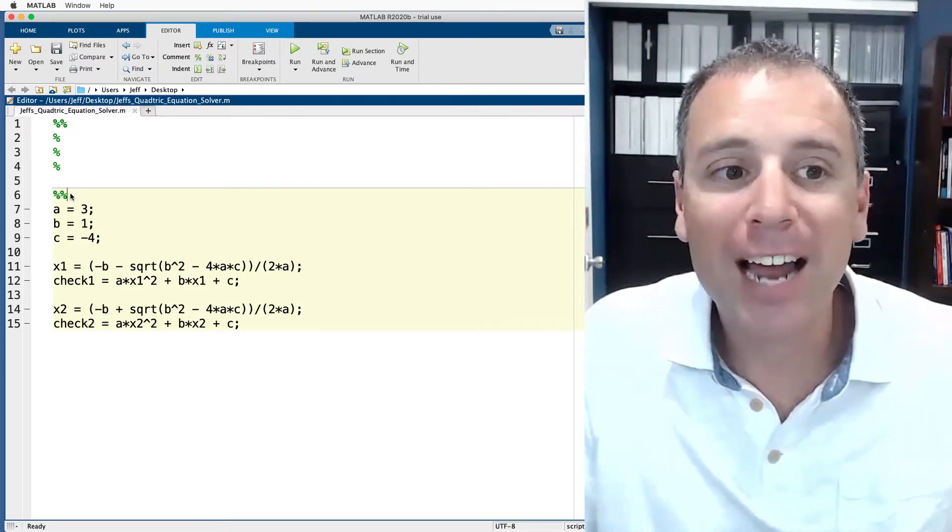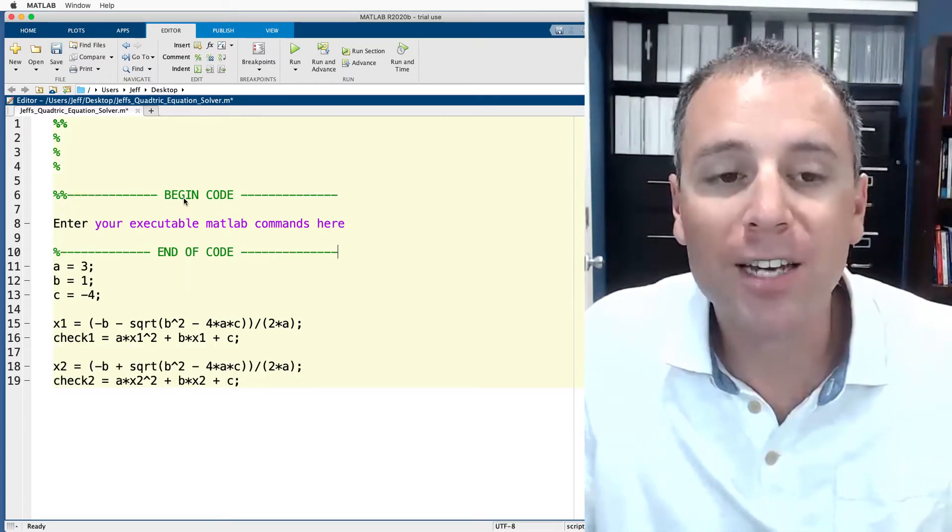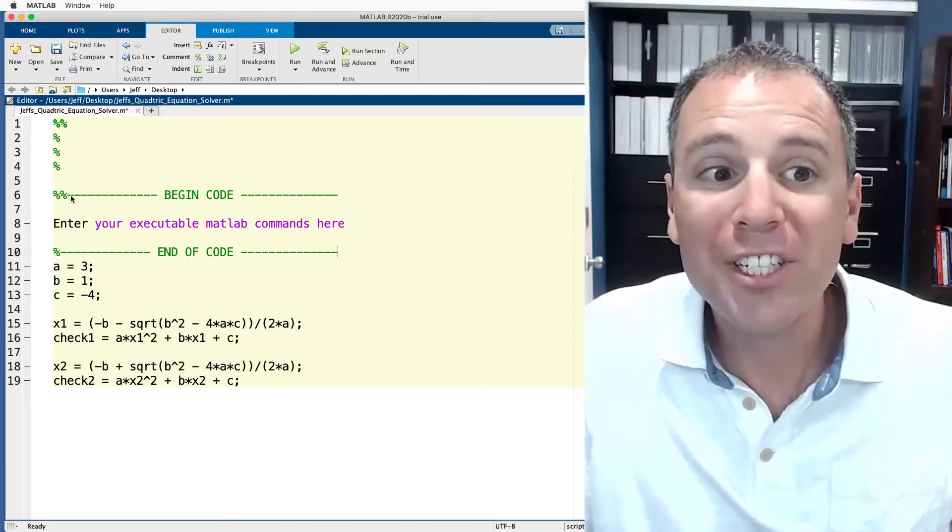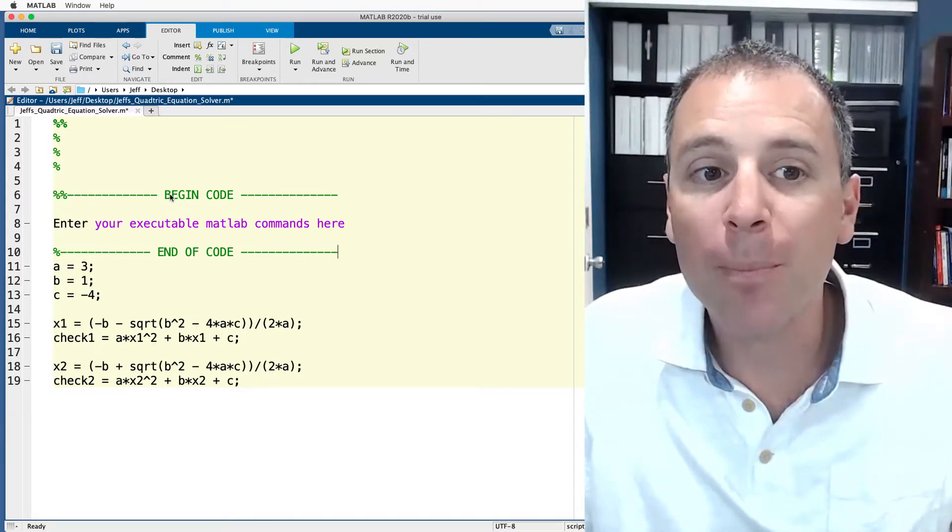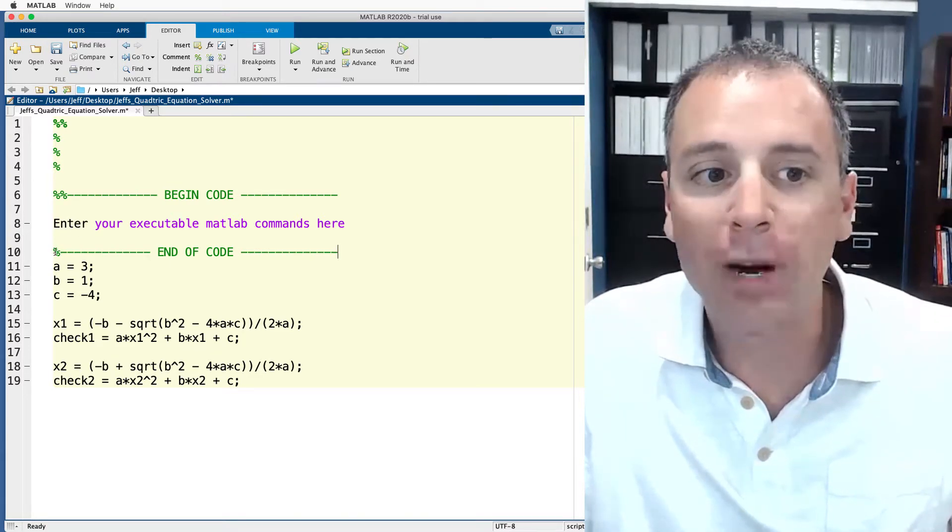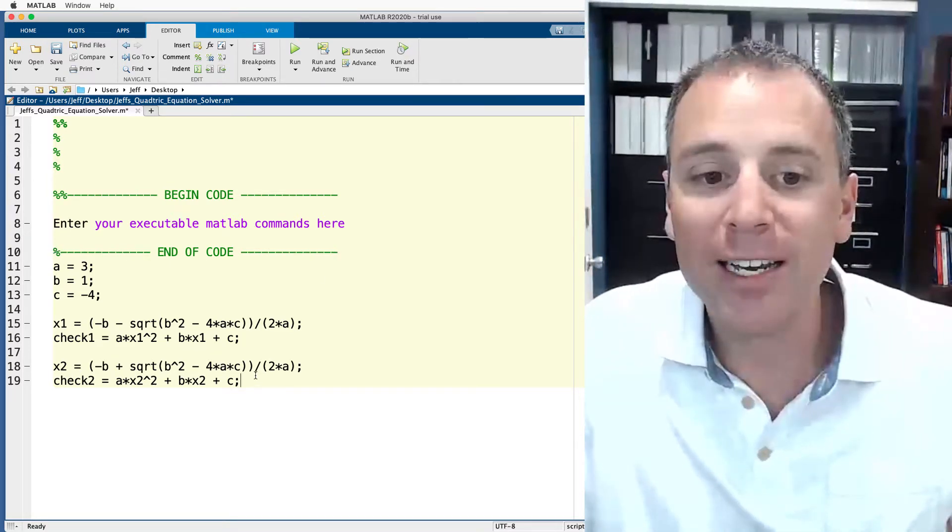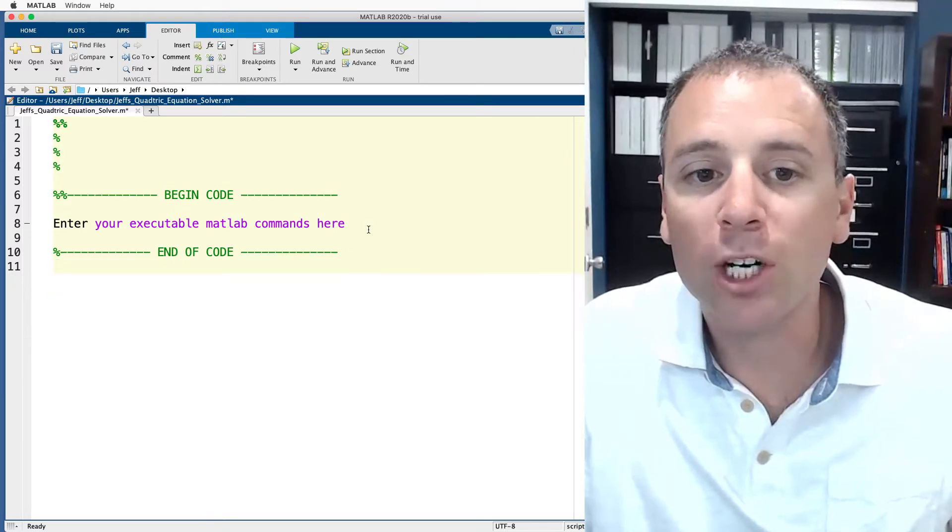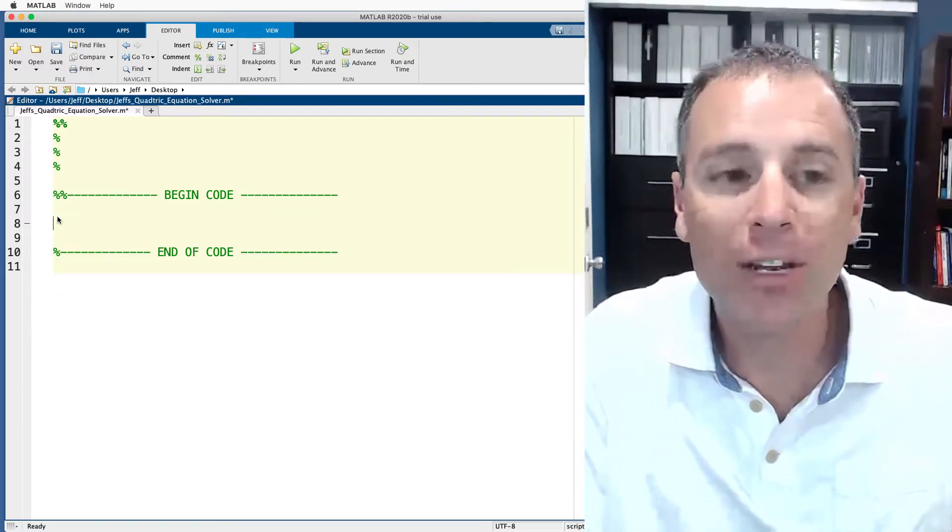In order to highlight that I'm gonna go ahead and just copy and paste some specific items which is a list of dashes and then uppercase BEGIN CODE, enter code here, and then we're gonna have a percent sign, same idea.